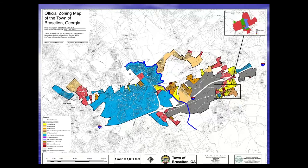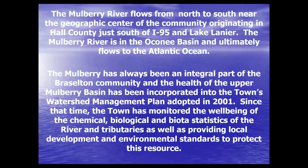If you look at our zoning map, right in the center you'll see the blue line — that's the Mulberry River — which gives you some idea of why it's so important to us. It goes right through the middle of town. The river flows north to south and is our geographic center. It originates in Hall County right by Lake Lanier, is in the Oconee Basin, and flows to the Atlantic Ocean. It's always been part of our community, and the health and welfare of that basin was actually put in our watershed management plan in 2001. We were one of the first communities in Georgia to have a watershed plan with EPD.